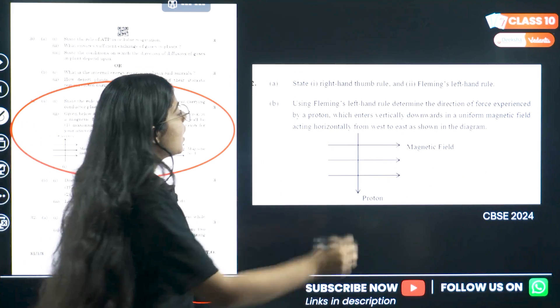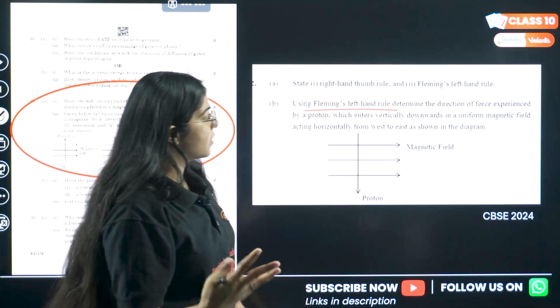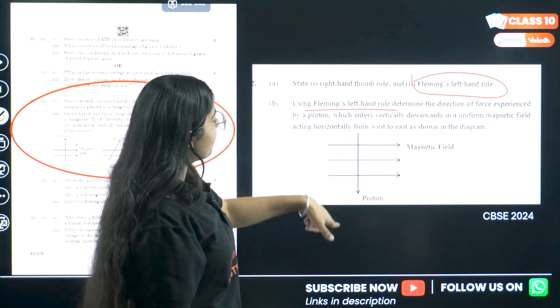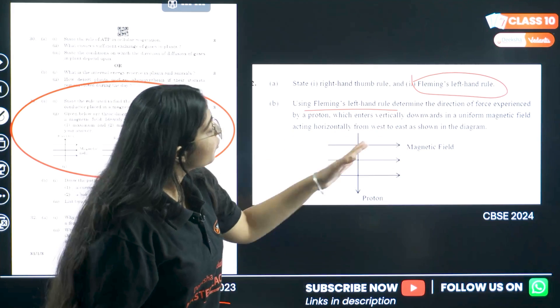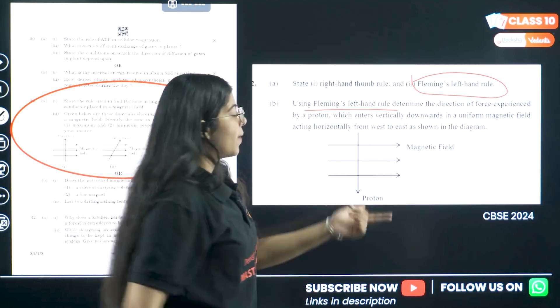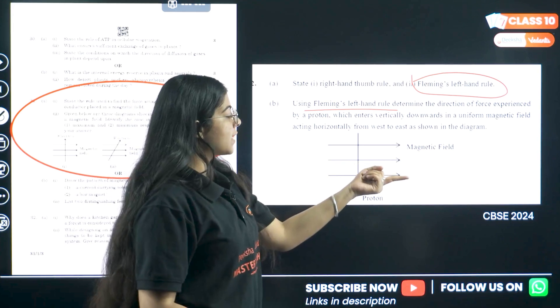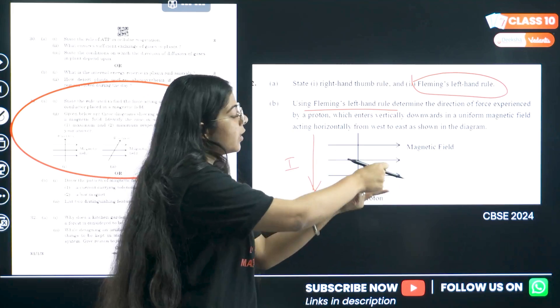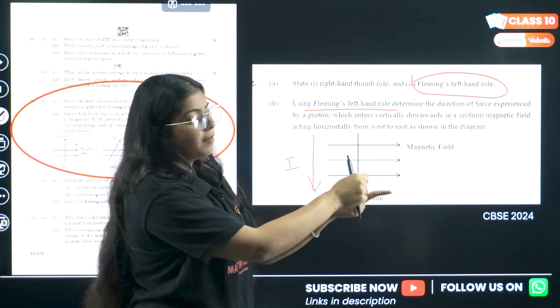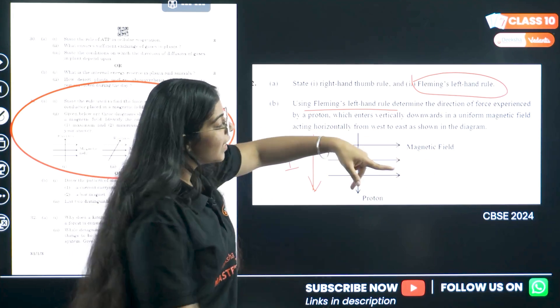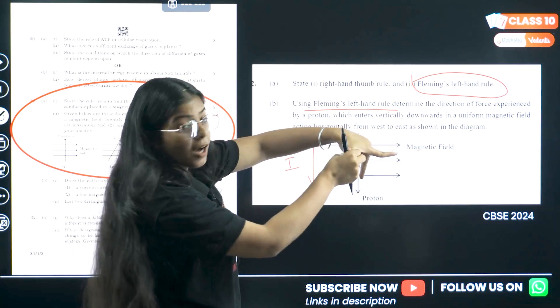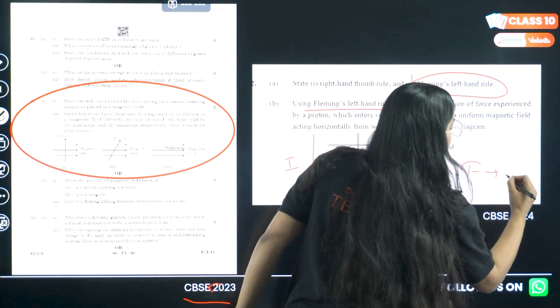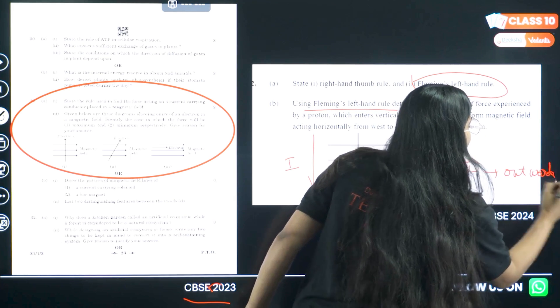In 2024 the similar kind of question using Fleming left hand rule. The direction of force experienced by a proton which enters vertically downward in a uniform magnetic field acting horizontally. So my magnetic field was given by index finger. The proton and current has same direction. The direction of current was given by my middle finger. And if I point like this magnetic field, direction of current, now thumb will give me the direction of force. So force will be outwards, outwards of the plane.